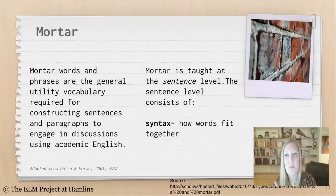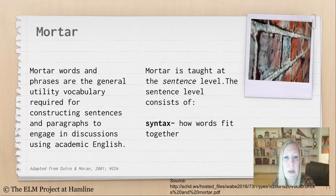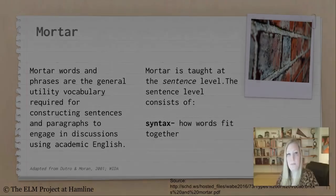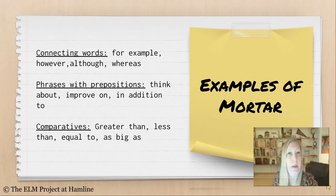Moving on to mortar — we started at the word level and now move to the sentence level. Mortar words and phrases are the general utility vocabulary used for constructing sentences and paragraphs to engage in discussions using academic English. Mortar words are found across disciplines; they're not specific to any particular discipline. Mortar is taught at the sentence level, which consists of syntax — how words fit together, otherwise known as grammar or structure or form. Some examples of mortar would be connecting words like 'for example,' 'however,' 'although,' 'whereas'; phrases with prepositions like 'think about,' 'improve on,' 'in addition to'; and comparatives like 'greater than,' 'less than,' 'equal to,' 'as big as.'